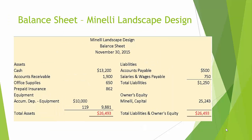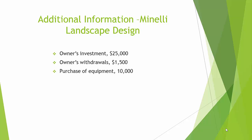Here is the balance sheet for Minnelli Landscape Design. We have a few current assets. Accounts receivable has a balance of $1,900. There is no inventory, but there are two prepaid expense items: office supplies and prepaid insurance. Total prepaid expenses are $650 plus $862, giving a total of $1,512. On the liability side, accounts payable is $500 and salaries and wages payable is $750. There is no income taxes payable. Additional information: owner's investment $25,000, owner's withdrawals $1,500, and purchase of equipment $10,000. This information will be used in the statement of cash flows.